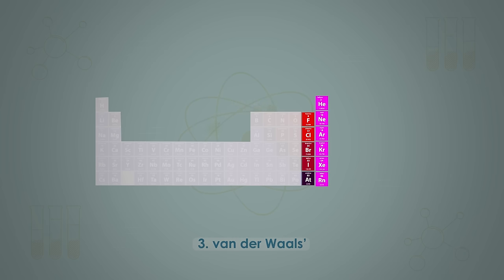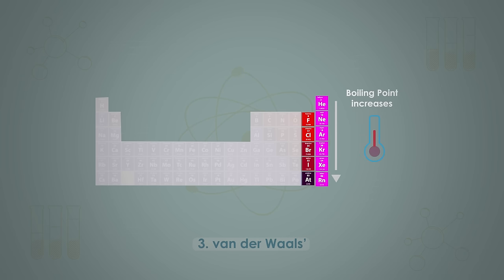As the number of electrons in the molecule increases, so do the van der Waals forces. This explains why there is an increase in boiling point as we go down the group of halogens and down the group of noble gases.